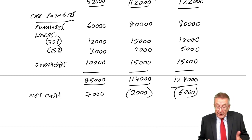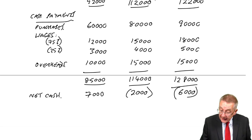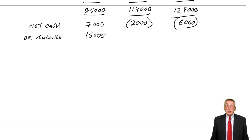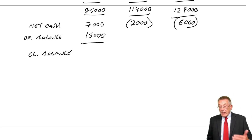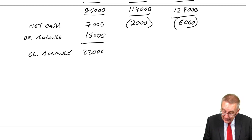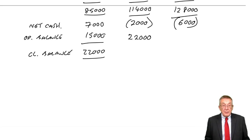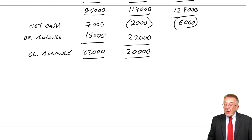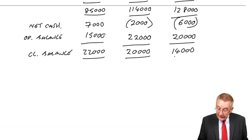What we really want to know is what our cash balance will be at the end of each month. The opening balance at the beginning of January was 15,000. During January, we receive a net 7,000, so at the end of January it'll be 22,000. That becomes the opening balance for February. With a net payment of 2,000, the end-of-February balance is 20,000. Starting March with 20,000 and a net payment of 6,000, we expect the end-of-March balance to be 14,000.